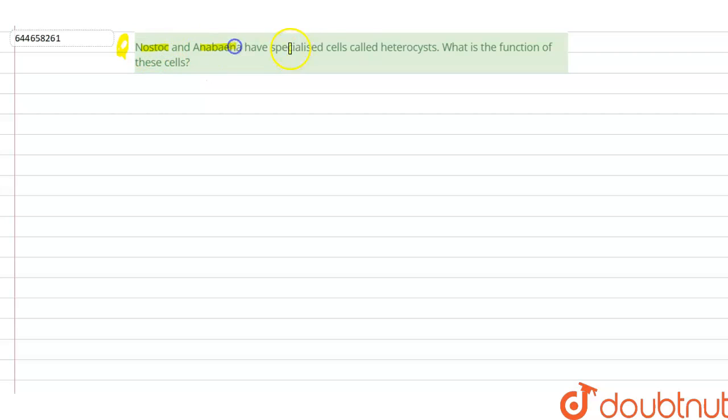Nostoc and Anabina have specialized cells called heterocytes. What is the function of these cells? So, Nostoc and Anabina are considered as cyanobacteria.